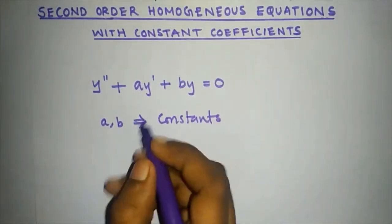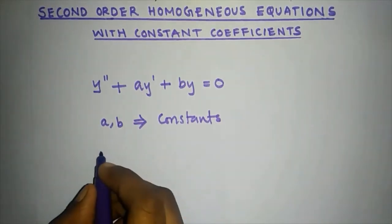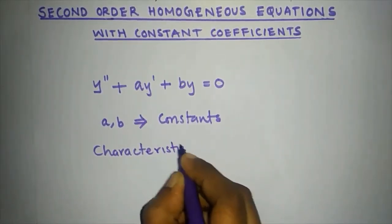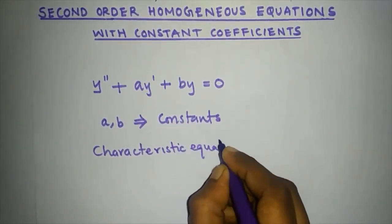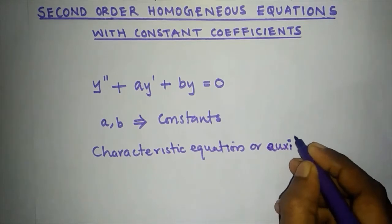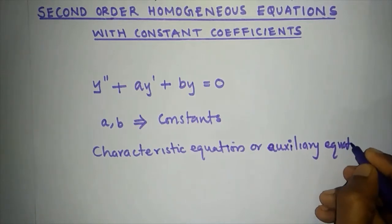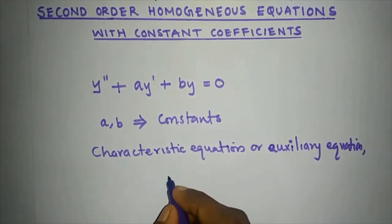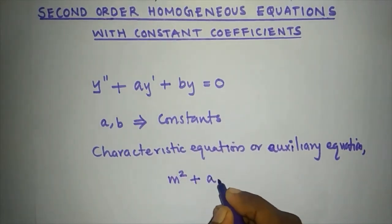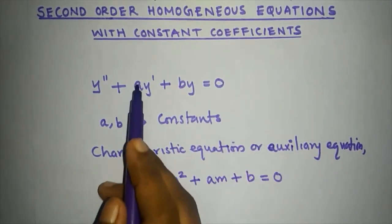In this case, we will find a characteristic equation — also called an auxiliary equation. The general form of the characteristic equation is: m squared plus a·m plus b equals 0.